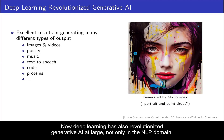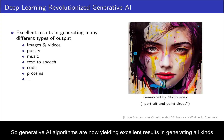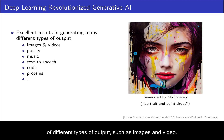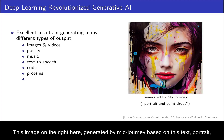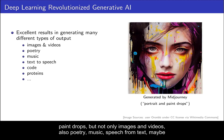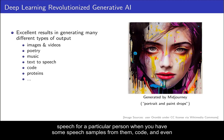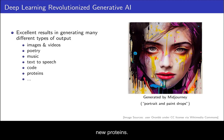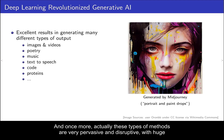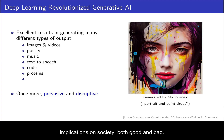Deep learning has also revolutionized generative AI at large, not only in the NLP domain. Generative AI algorithms are now yielding excellent results generating all kinds of different types of output such as images and video. This image on the right here was generated by Midjourney based on the text prompt 'portrait and paint drops.' But not only images and video — also poetry, music, speech from text, speech for a particular person given some speech samples, code, and even new proteins. These methods are very pervasive and disruptive with huge implications on society, both good and bad.